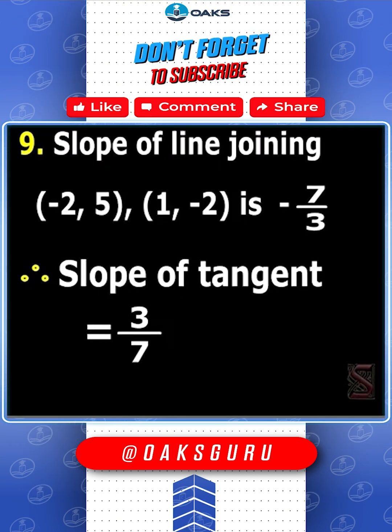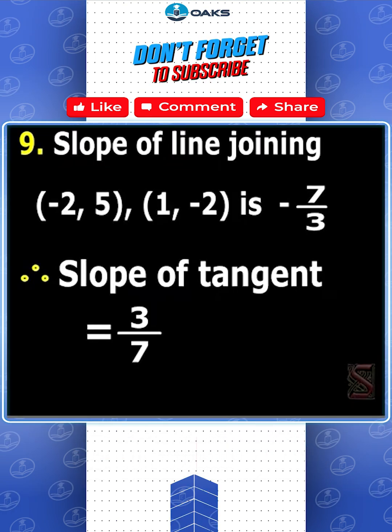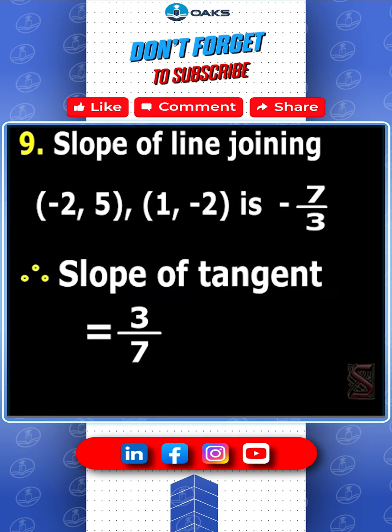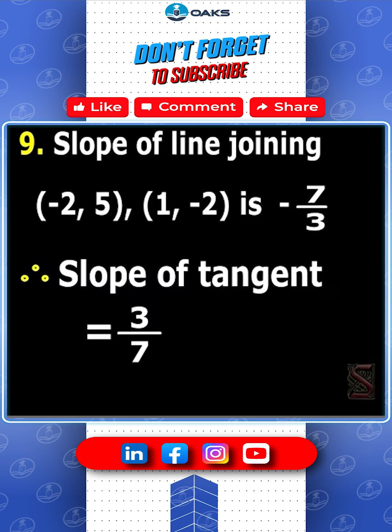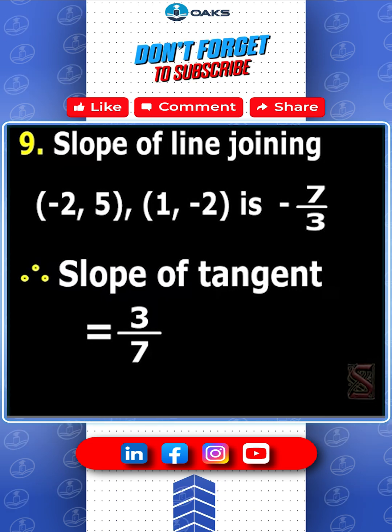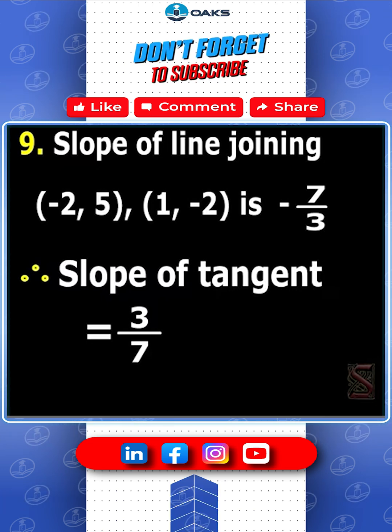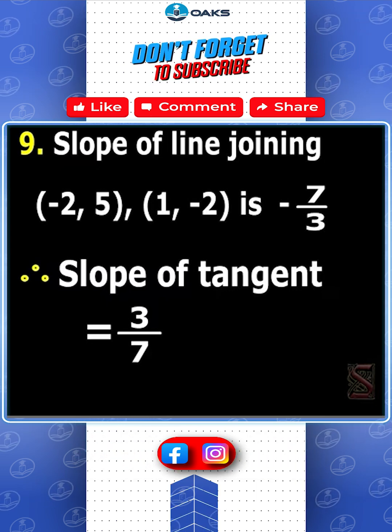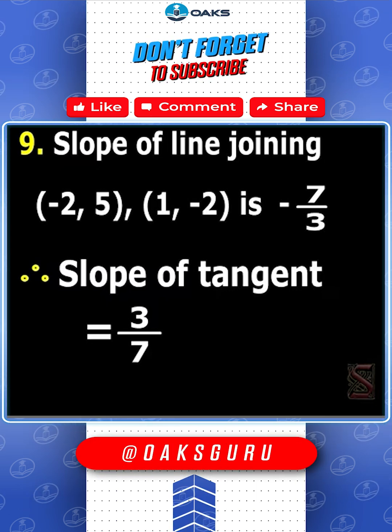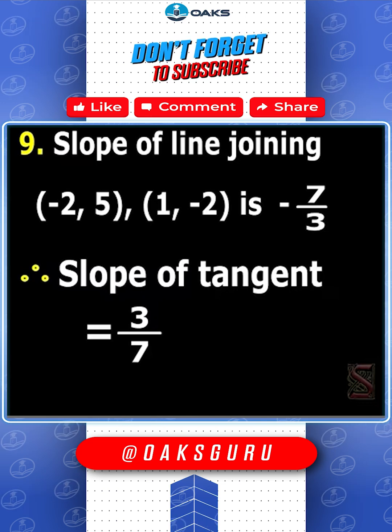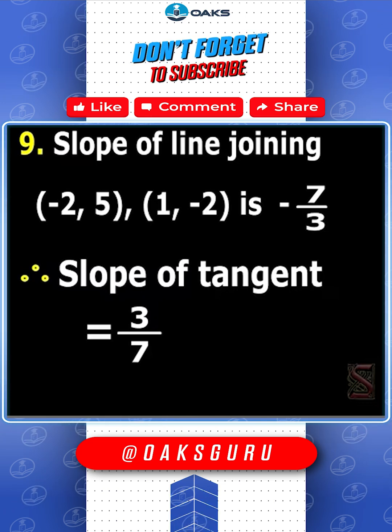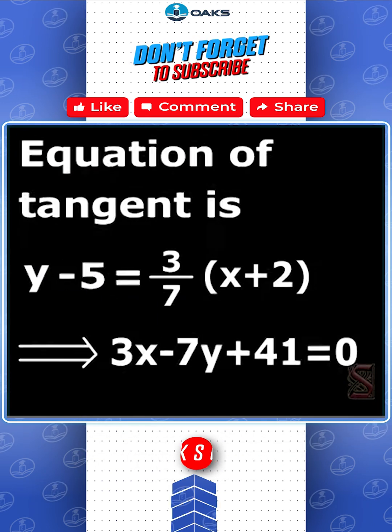Slope of the line joining (-2, 5) and (1, -2) is -7/3. Therefore, slope of the tangent is equal to 3/7.